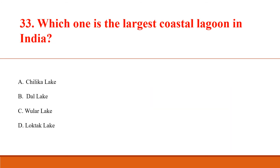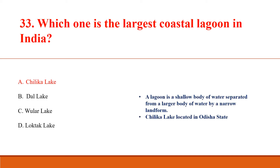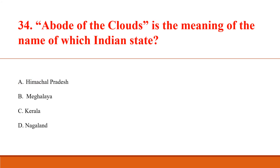Which one is the largest coastal lagoon in India? Answer A: Chilika Lake. A lagoon is a shallow body of water separated from a larger body of water by a narrow landform. Chilika Lake is located in Odisha state. 'A bird of the clouds' is the meaning of the name of which Indian state? Answer B: Meghalaya.